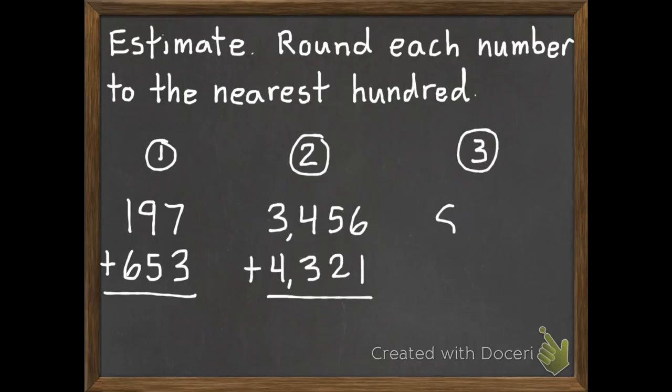Number one: 197 plus 653. Number two: 3,456 plus 4,321. And your last problem today is 8,649 subtract 5,718.